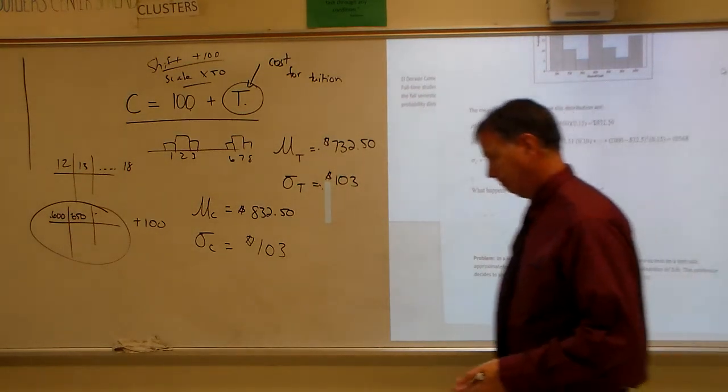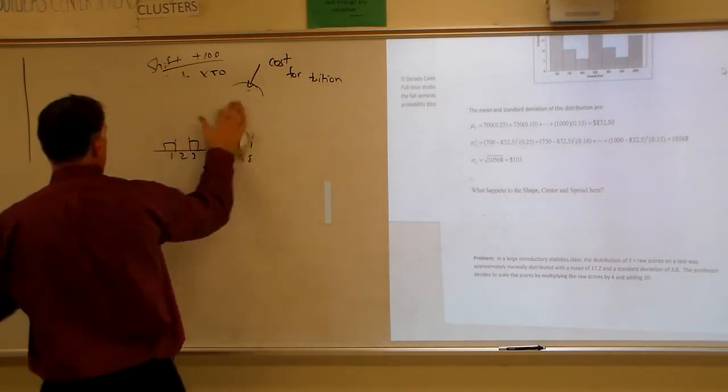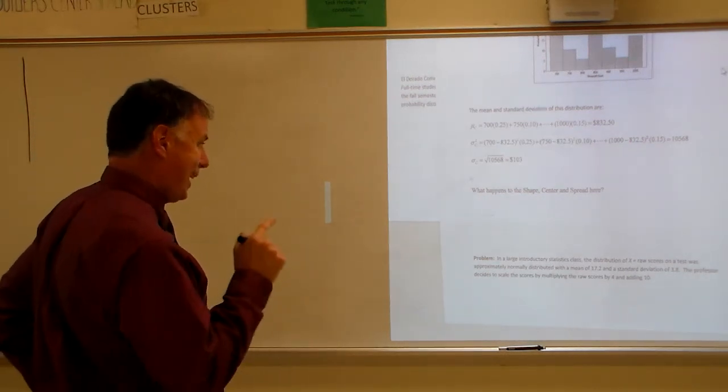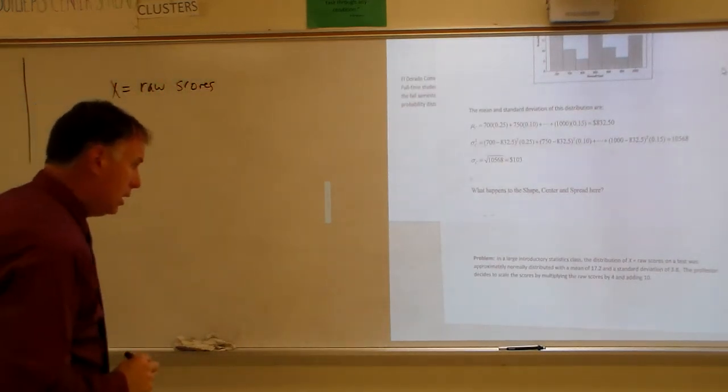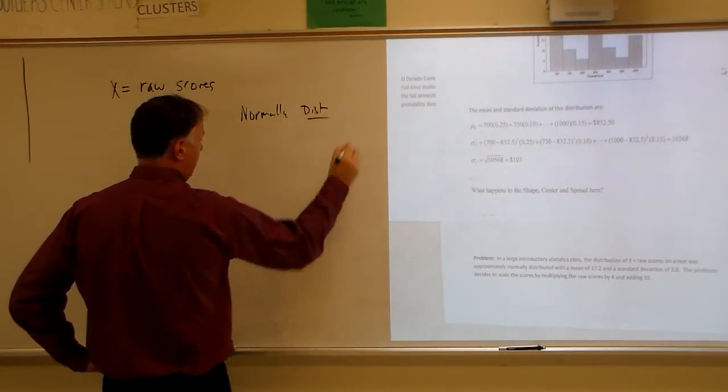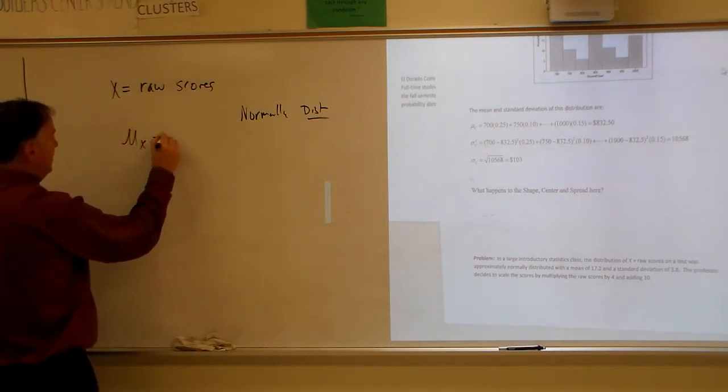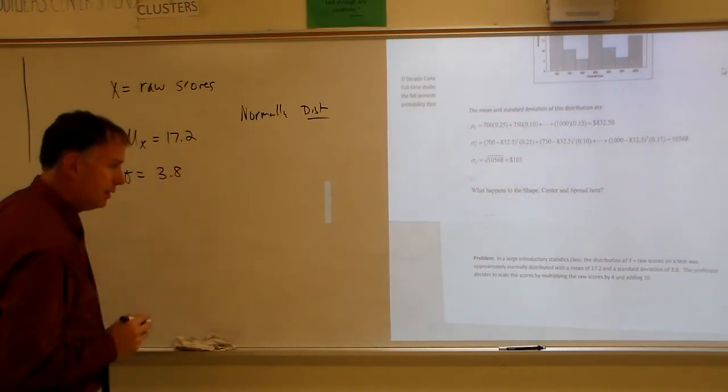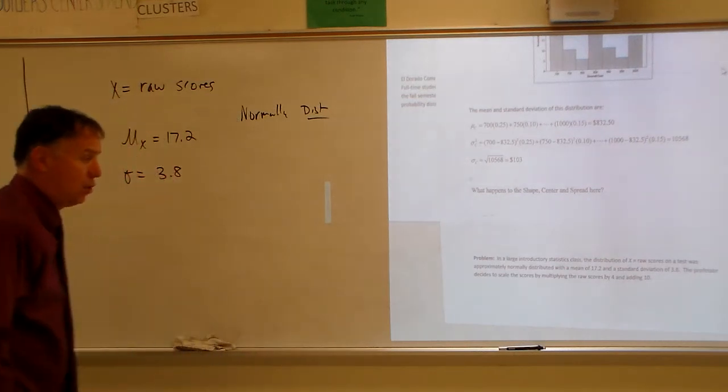So then we have a problem. And that's where we'll finish. That is where we will finish. In a large introductory statistics class, the distribution x of raw scores, so x equals raw scores, was approximately normally distributed with a mean of x, so mu of x equals 17.2, and a standard deviation of 3.8. The professor decides to scale the scores by multiplying the raw scores by 4 and adding 10.